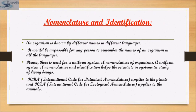An organism is known by different names in different languages, making it impossible to remember all names. Hence, there is a need for a uniform system of nomenclature. ICBN is the International Code for Botanical Nomenclature, used for plants. Scientific names are based on agreed principles and criteria. For animals, taxonomists have evolved the International Code of Zoological Nomenclature. Scientific names ensure that each organism has only one name.